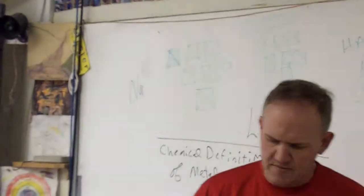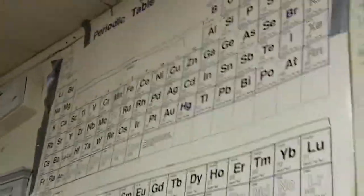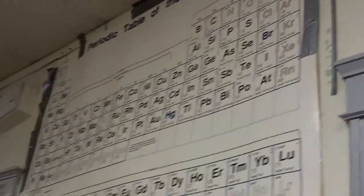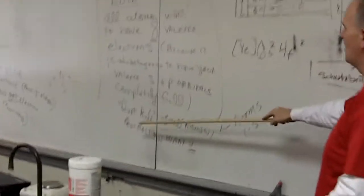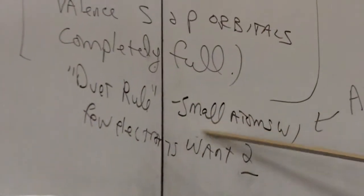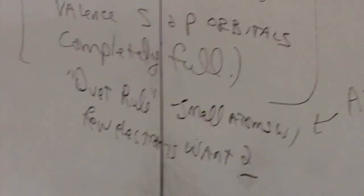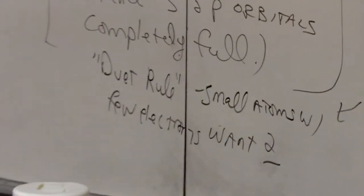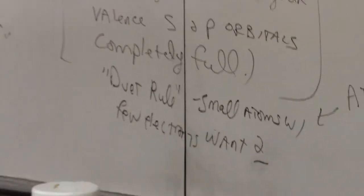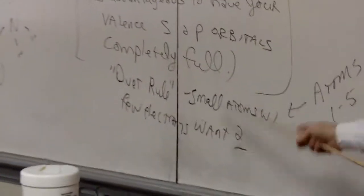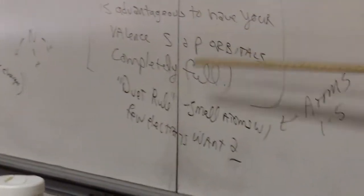Let's go back to the periodic table and review what we learned yesterday. I skipped something — the duet rule. Let's write this down as well. The duet rule is sort of a corollary to the octet rule. It deals with small atoms — atoms one through five: hydrogen, helium, lithium, beryllium, boron. Those tiny little atoms with not very many electrons. If you're a tiny atom, it's hard to get eight electrons, and so they're happy with two. It's the duet rule. Most atoms want eight valence electrons, but small atoms are happy with just two.